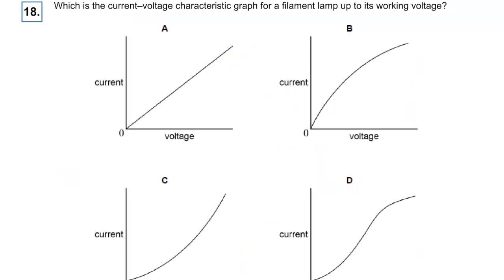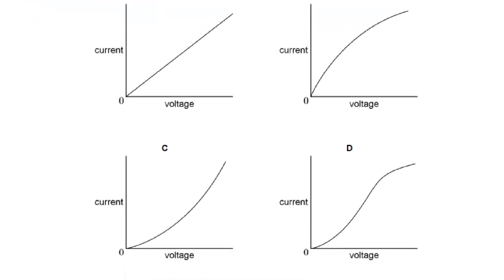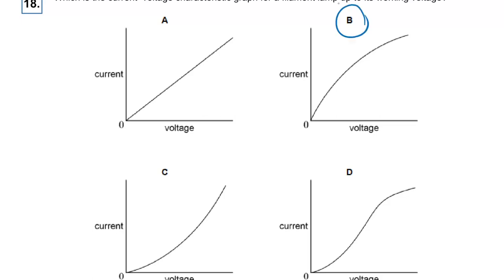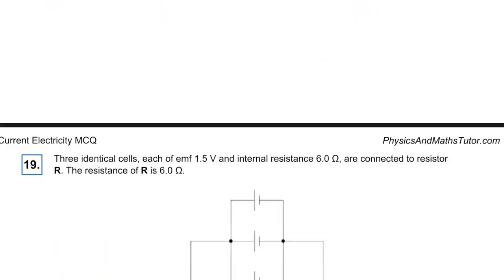Question eighteen: what's the current-voltage characteristic for a filament lamp up to its working voltage? It can't be A because that implies ohmic behaviour. D is odd. C doesn't match. The answer is B — as the lamp heats up, resistance increases and the curve bends away from the linear.